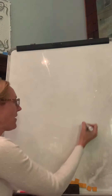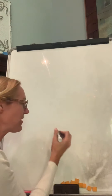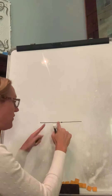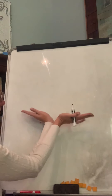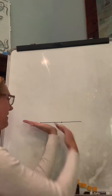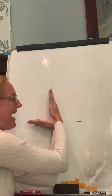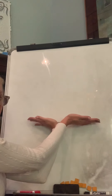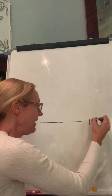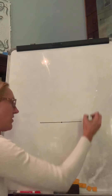All the way around is 360 degrees. Half of 360 is 180 degrees, so if the angle is completely open and flat — think about the hands of a clock. If they're together, that's zero degrees. If they go halfway around the clock, that's 180 degrees. All the way around is 360 degrees.